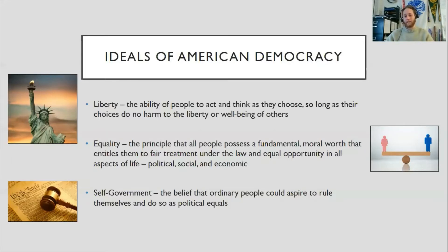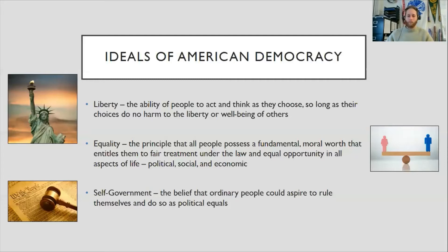The third ideal is self-governance. This is an ideal that goes back even before the Declaration of Independence, with colonists wanting to rule themselves. You can go back to the Massachusetts colonies and town halls where each community had their own elected body. Here in the United States we see this pretty thoroughly — we elect our sheriff, our mayor, our delegate, our senator, and all the way up to the president. Even at the local level we elect school board members and councilmen and councilwomen to represent us and write laws on our behalf.